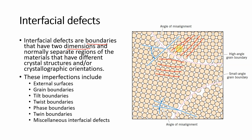Here we have shown two regions: in one region the crystallographic orientation is in one direction, and in the other region the crystallographic orientation is in a different direction. The boundaries between these two regions are called interfacial boundaries. These boundaries are two-dimensional — that is, they have both an x-coordinate and a y-coordinate.